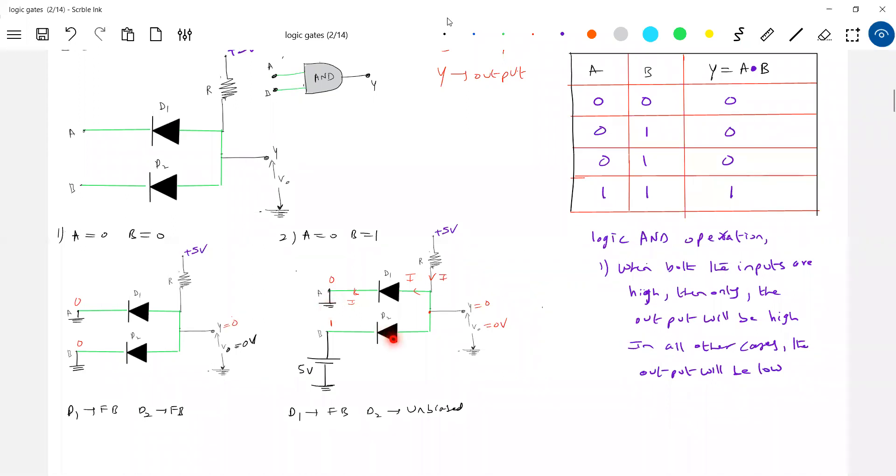But, sir, this unbiased means nothing is there. Sir, is it like nothing is there? So, no current will flow here. I think, similar case situation for A0. Okay, this is, I think, logic.